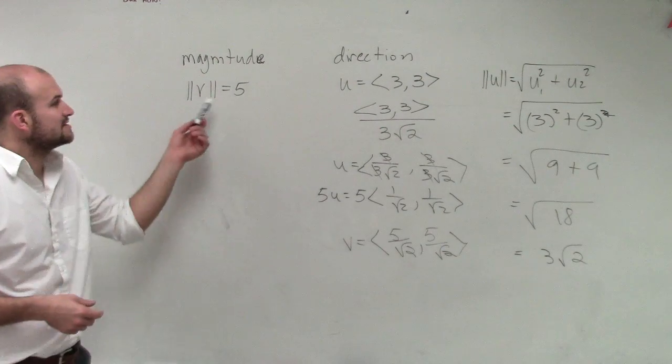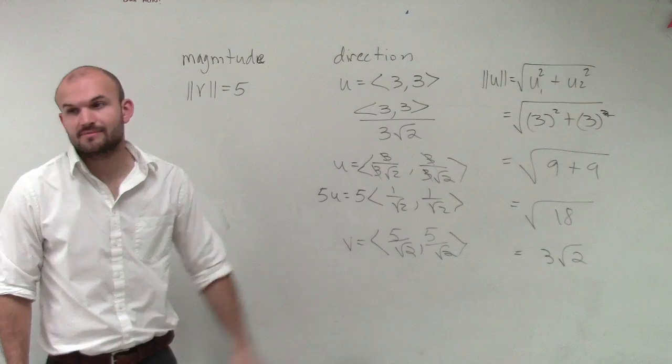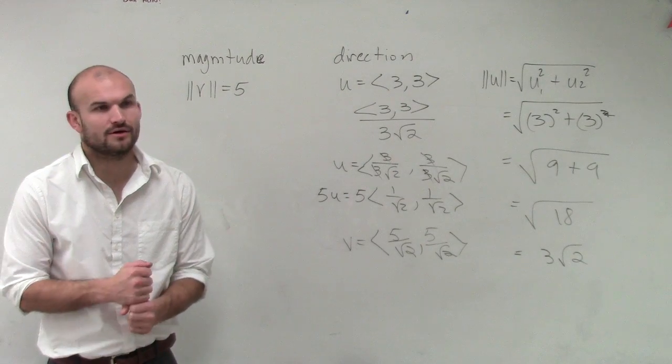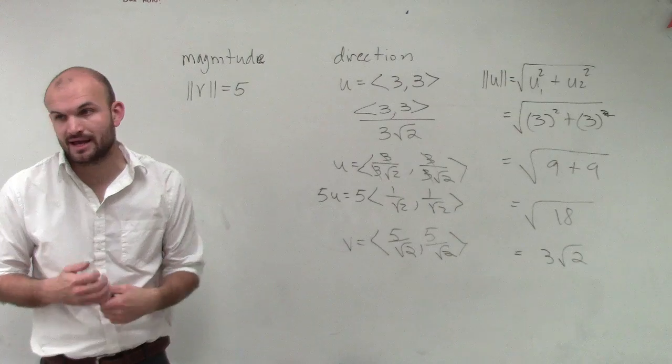So now my vector v has a magnitude of 5, now it has a magnitude of 5 with the same direction as my angle.